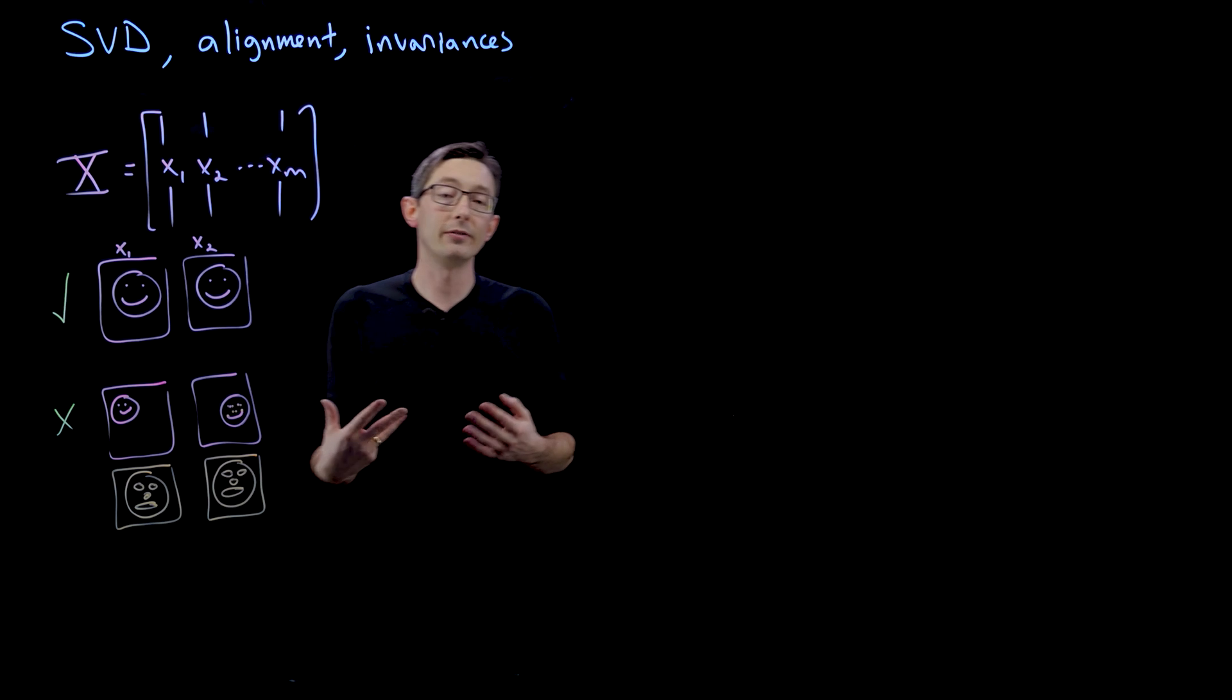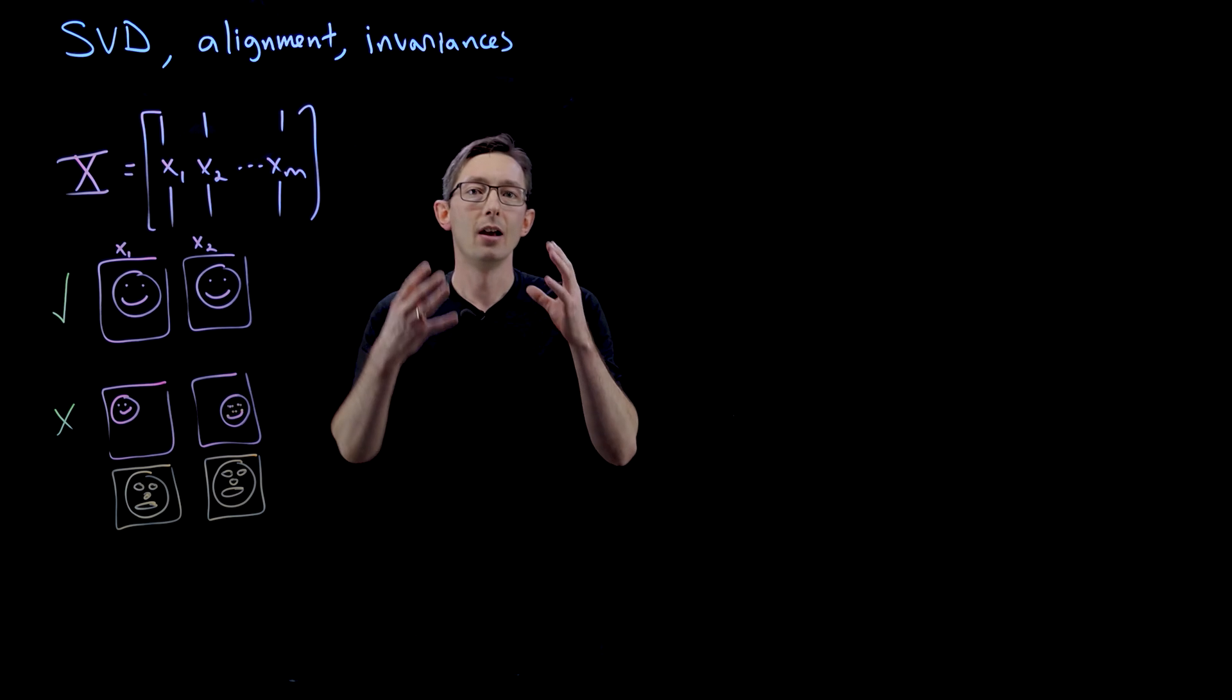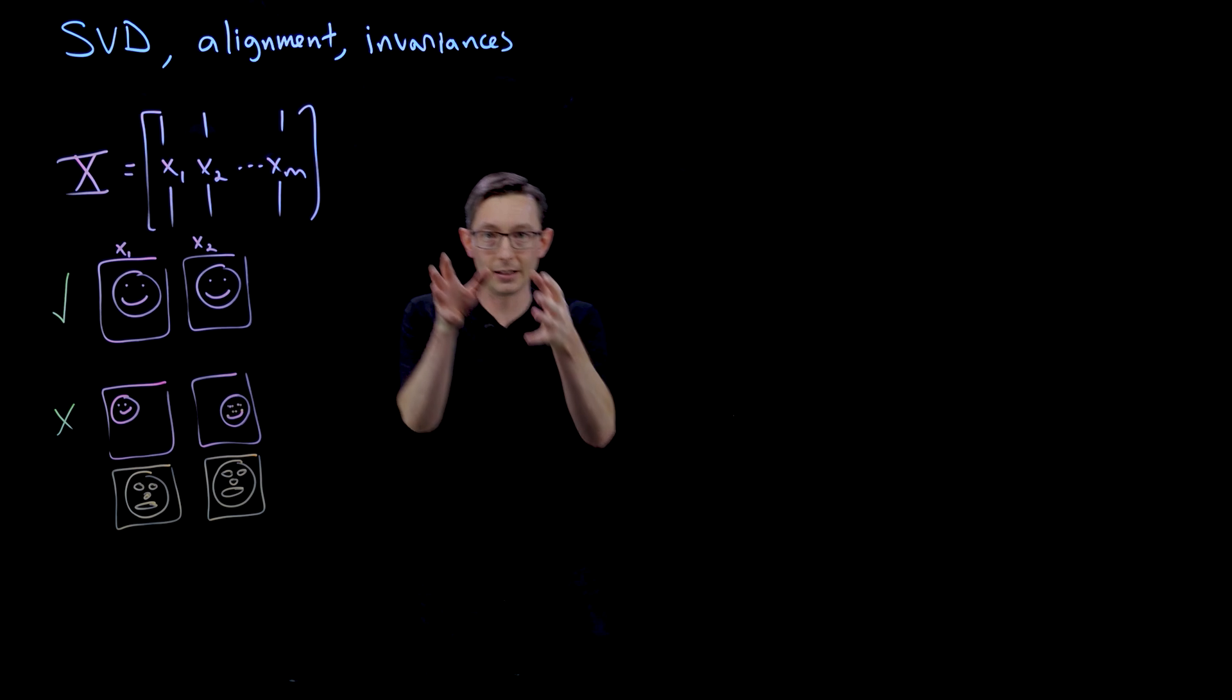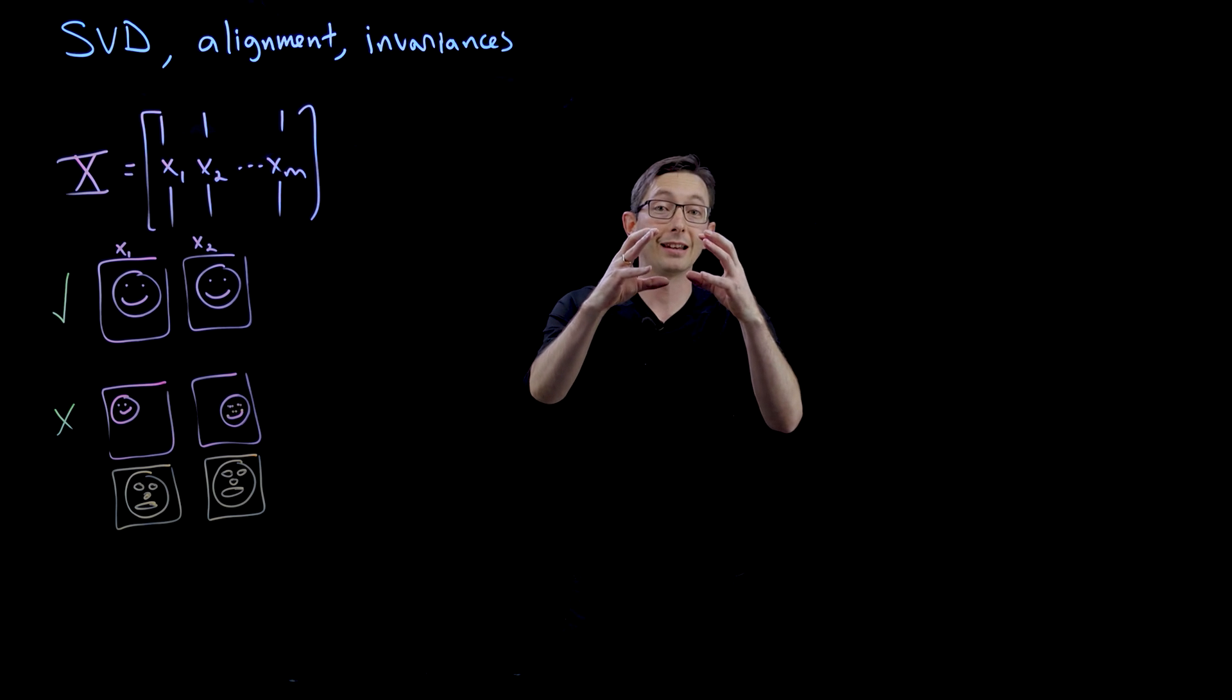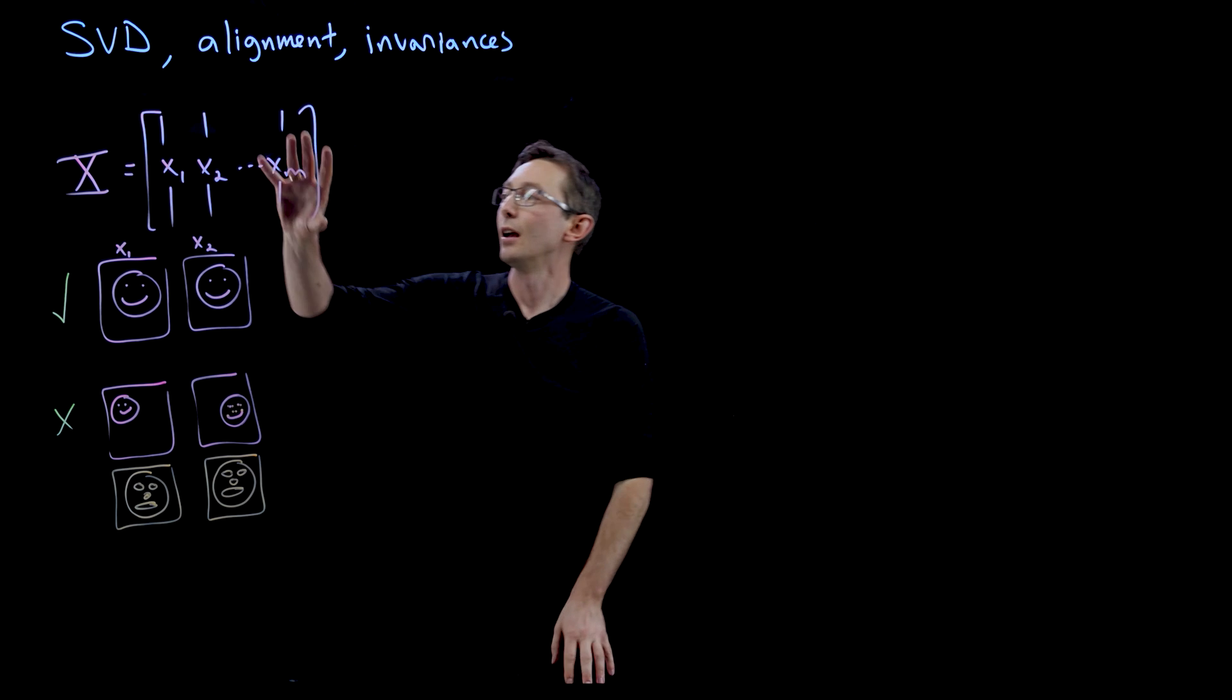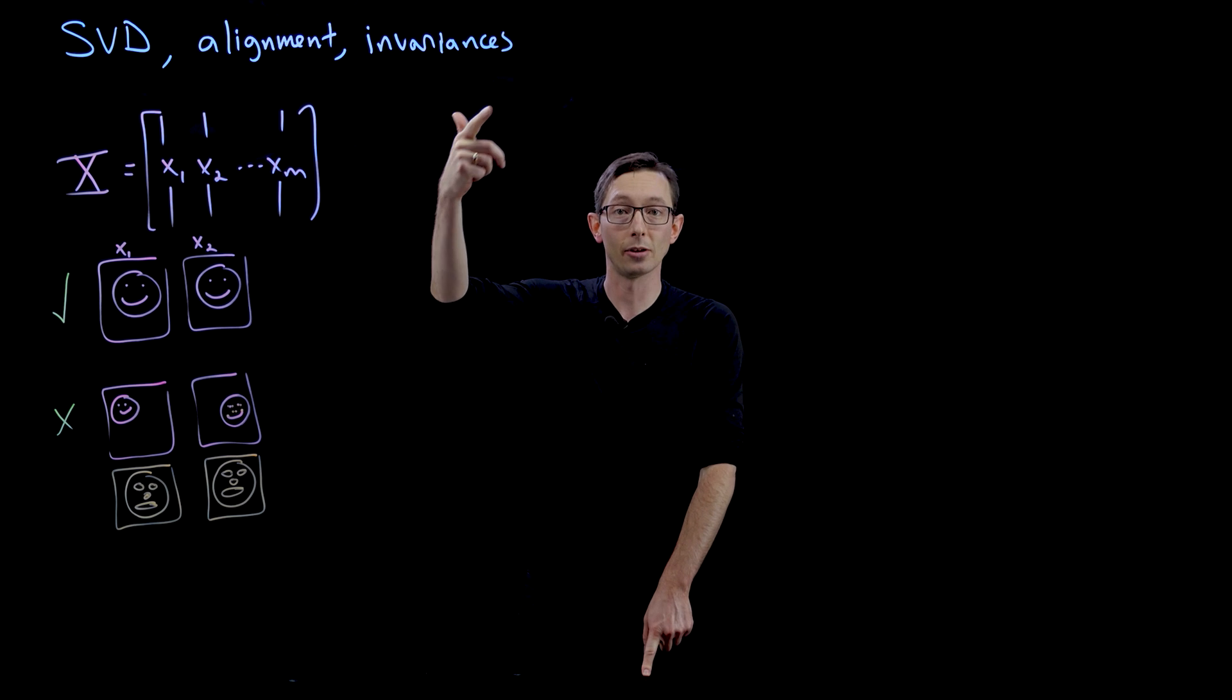Other examples of invariances that the SVD cannot handle very well that we can handle are rotations. So in fact, humans have a really good sense of what I'm going to call camera symmetries. So if you look at an object from any different perspective, you can very easily tell what that object is and classify it, regardless of translations, rotations, and scale invariances. Again, not so for the singular value decomposition. This is not built to have those invariances of translation, rotation, and scale.